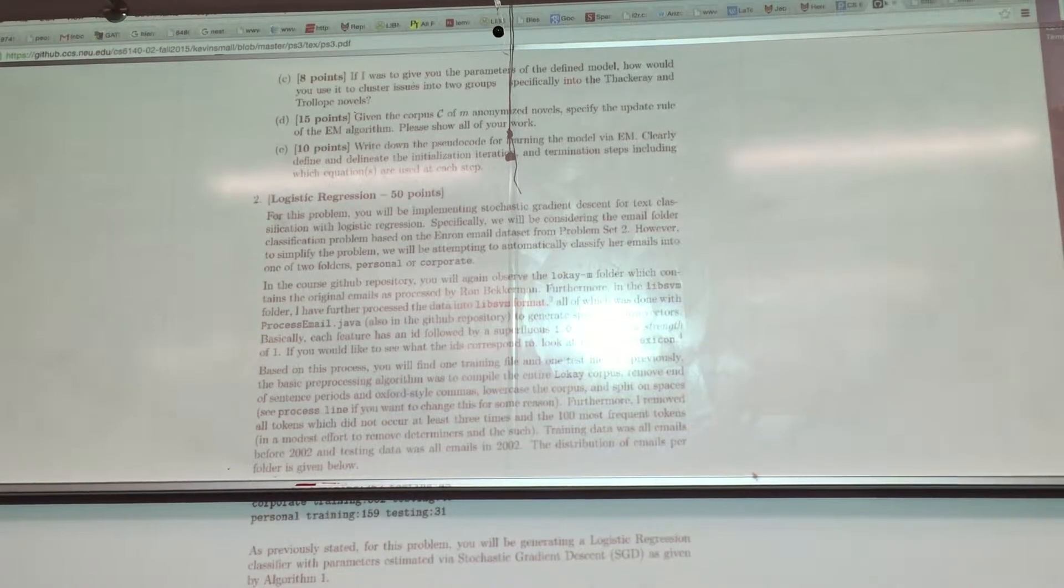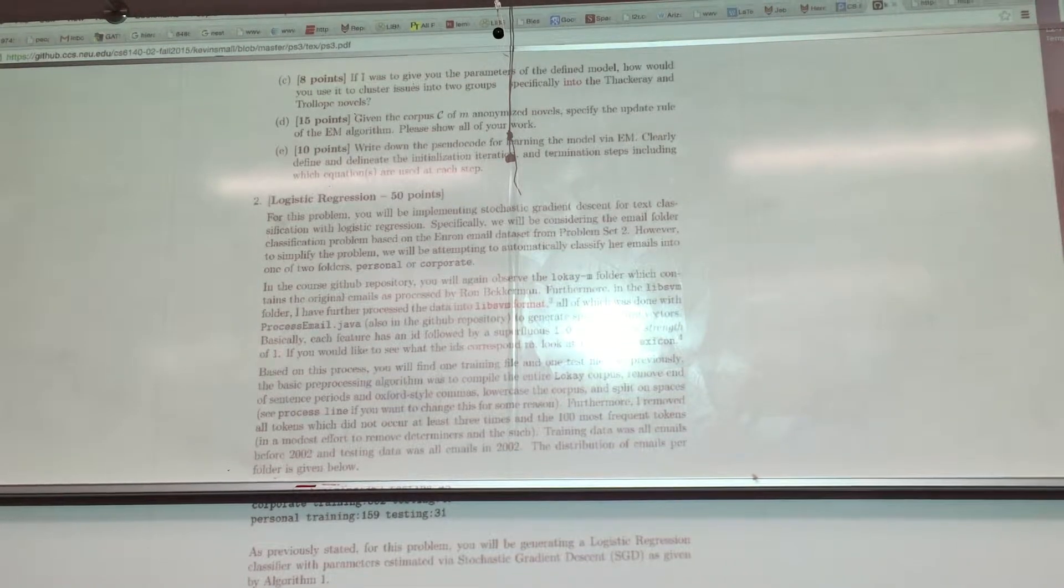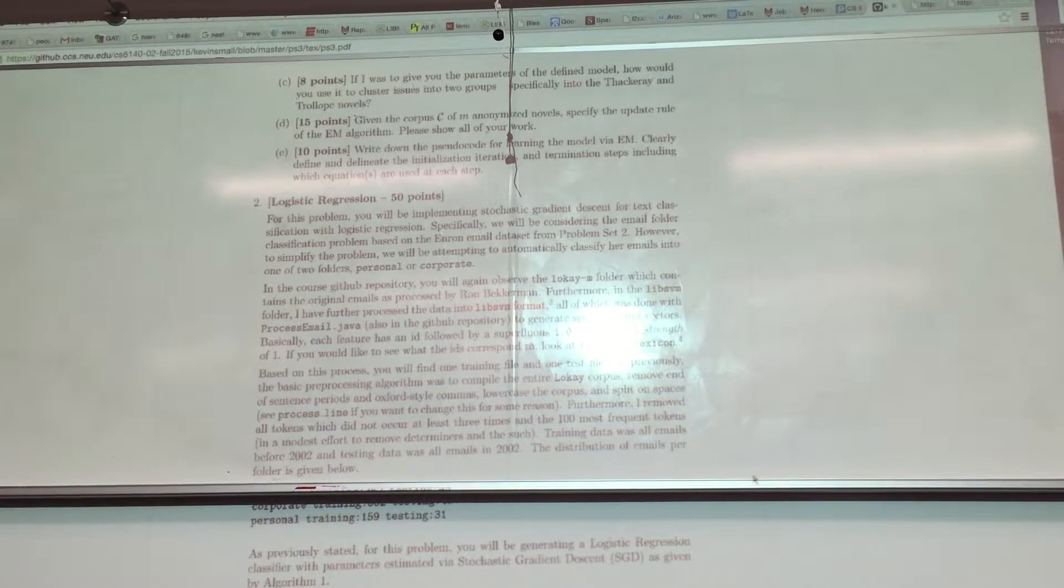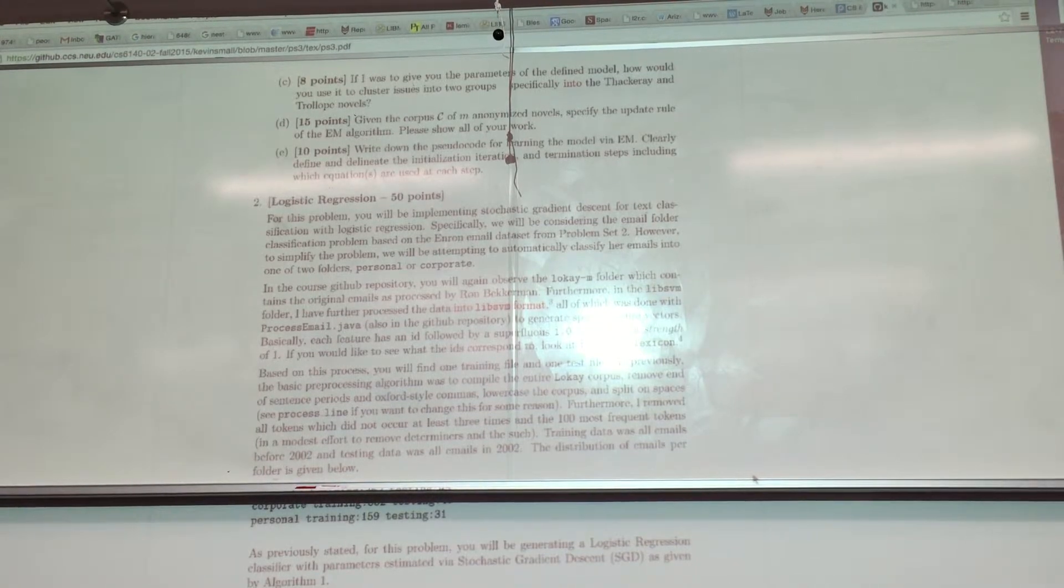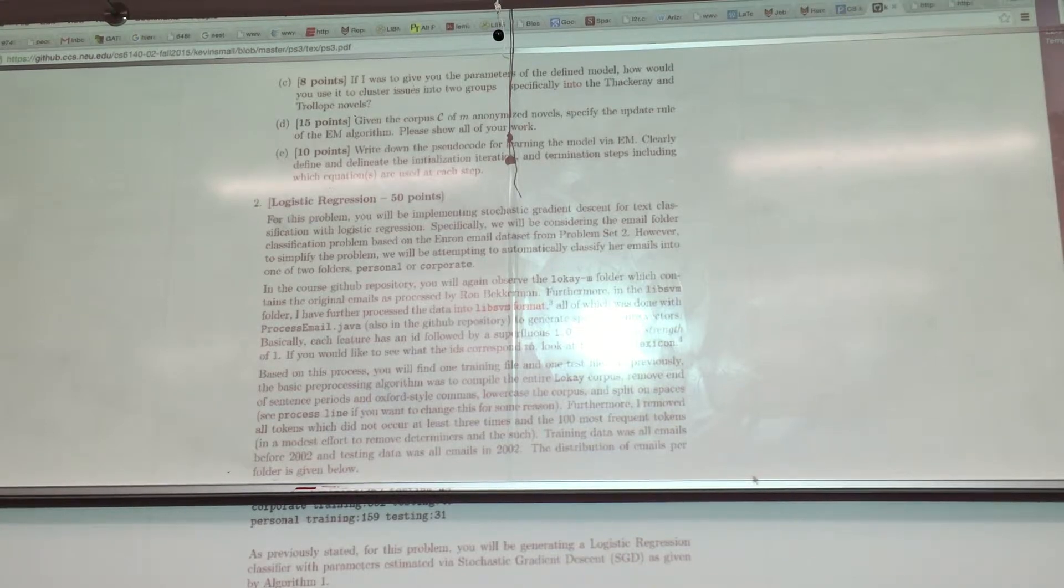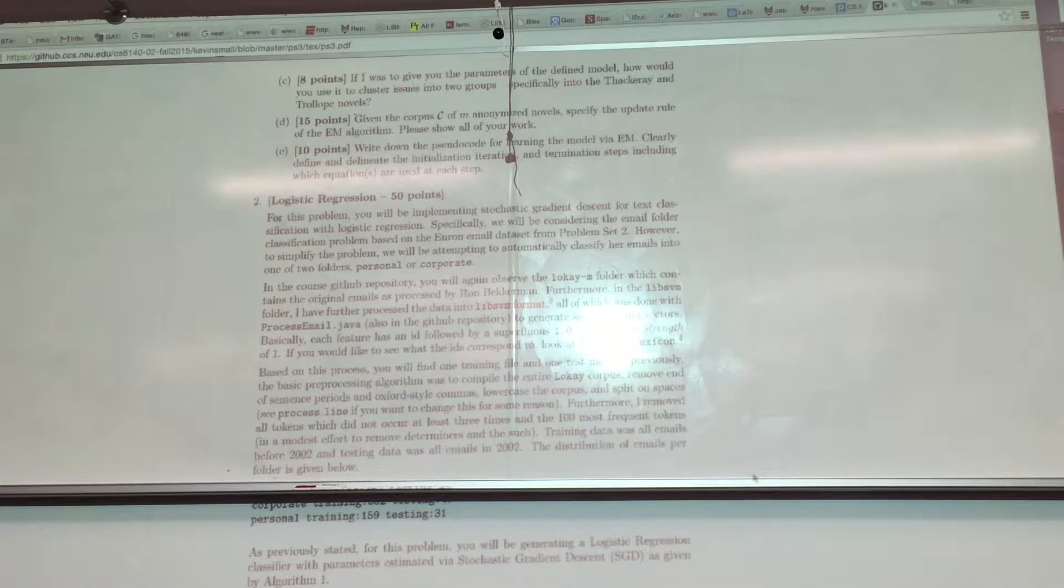What we have to do is determine which of the two models is more likely to have generated the novel. So what we would do is something like P of Trollope given a particular novel equals P of Trollope novel over P of Trollope novel.